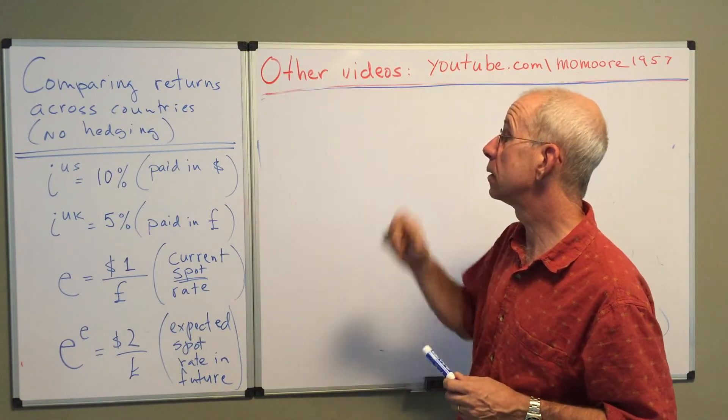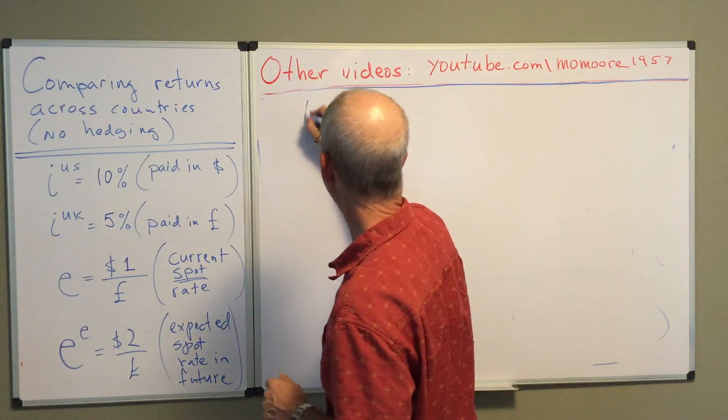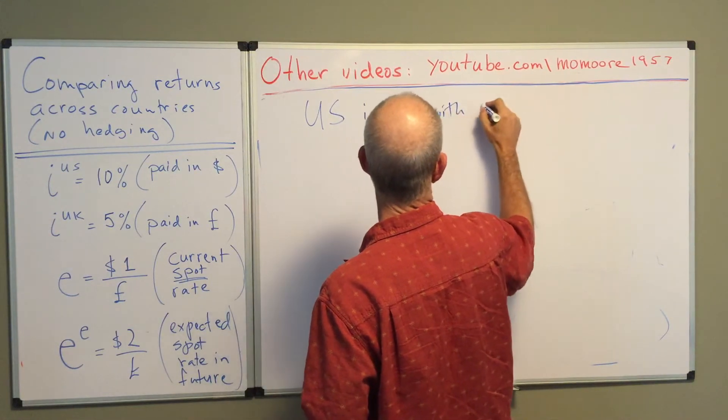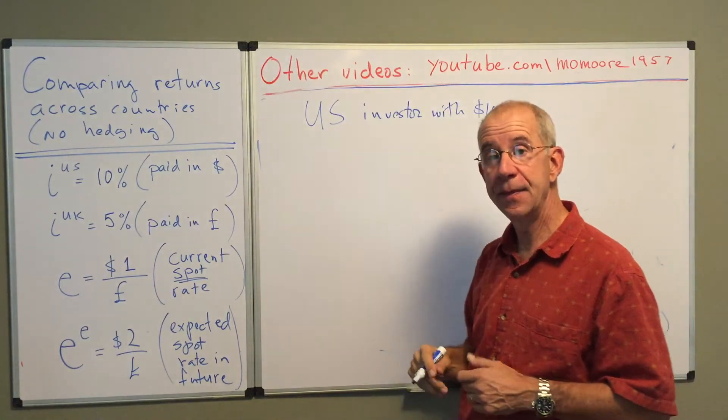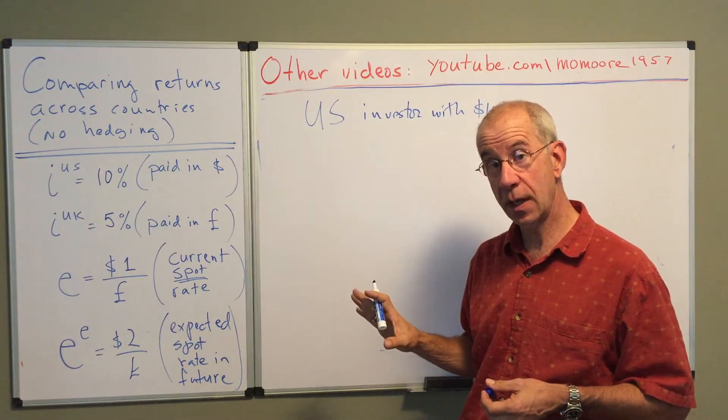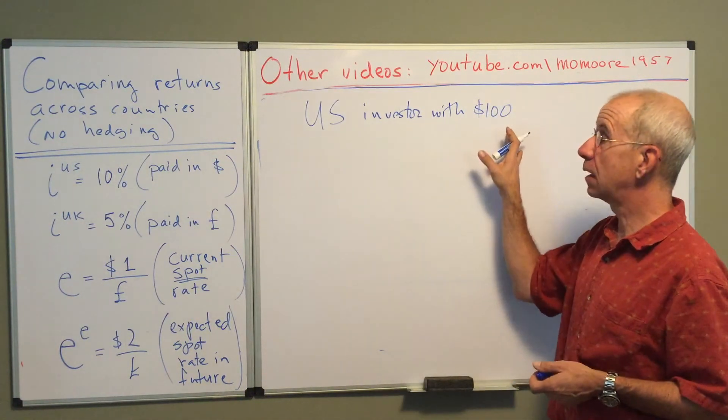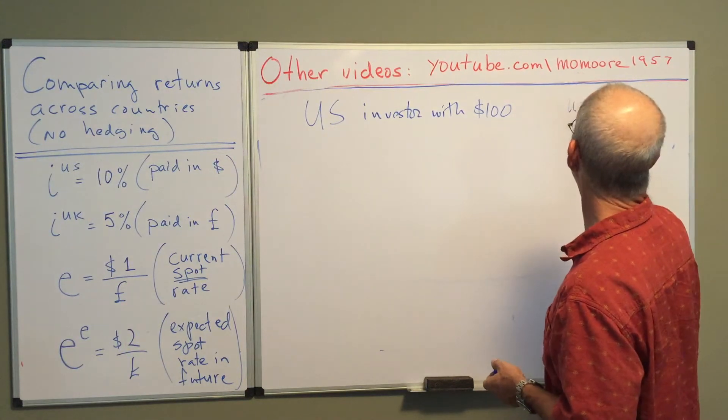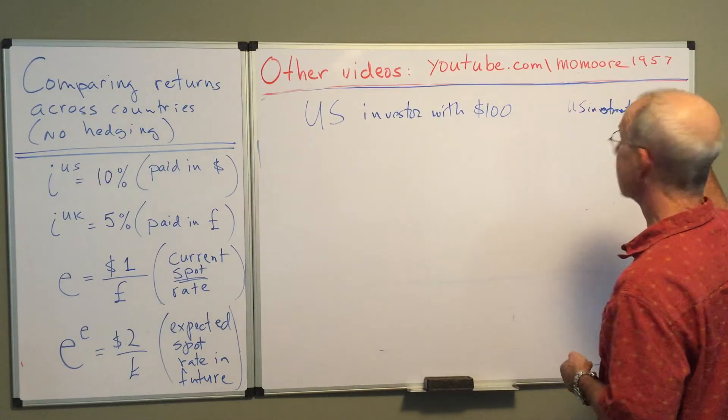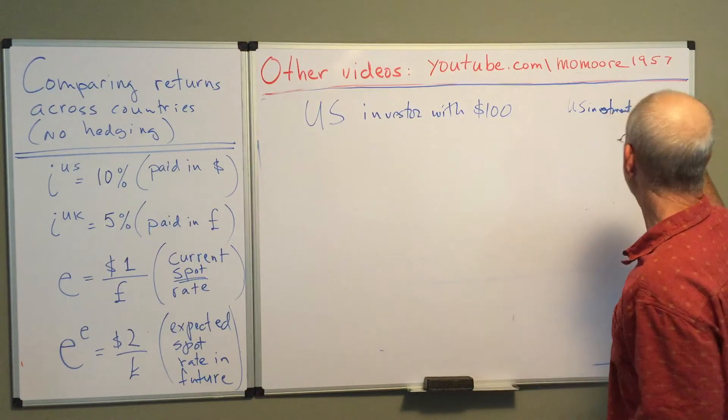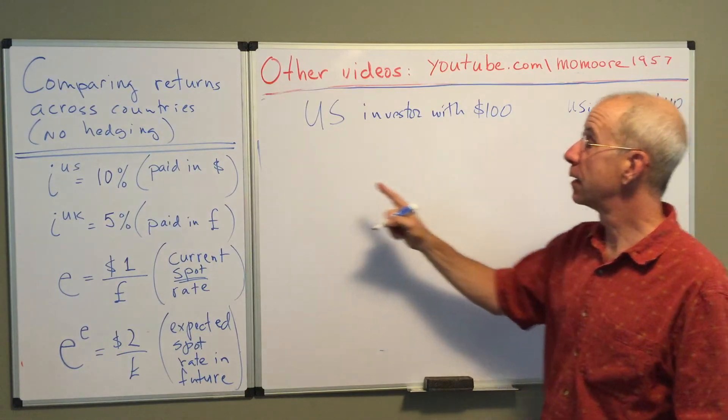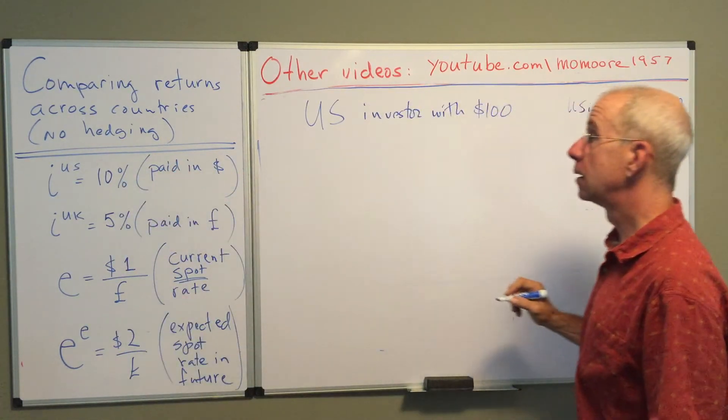And so let's take a look at this from the standpoint of a U.S. investor who might have a hundred dollars and then is comparing the U.S. versus the U.K. investment. Now if the investor buys the U.S. bond, and let's say it's a simple interest rate over the course of a year, they'll end up with a hundred and ten dollars if they invest in the U.S. at ten percent.